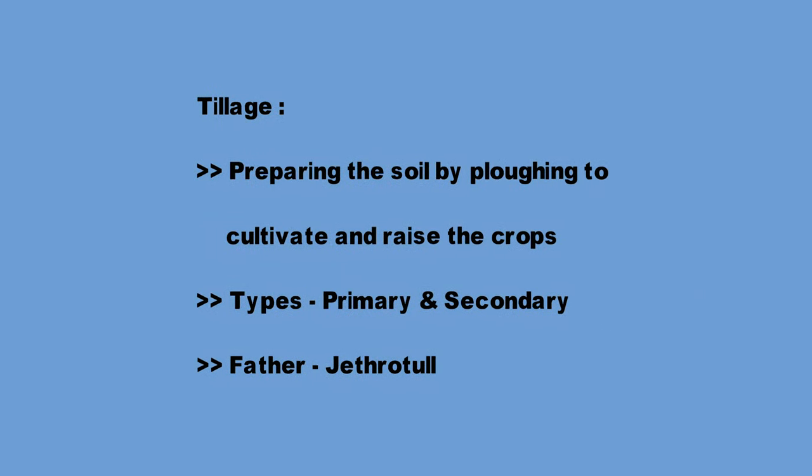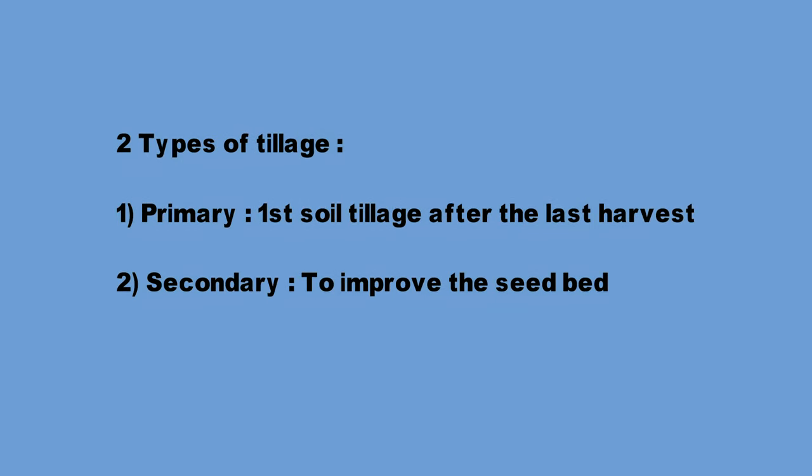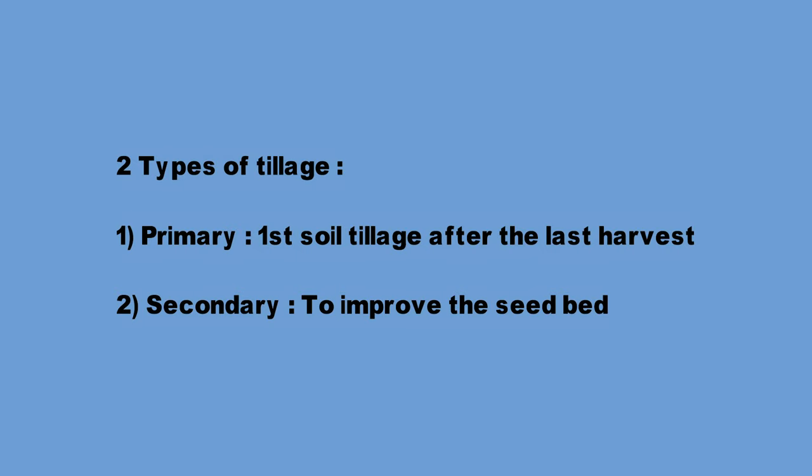The second topic is tillage. It is a process of ploughing and preparing the soil for seeds to sow, to cultivate, and to raise the crops. Jethro Tull is the father of tillage. The two types of tillage are primary and secondary. Primary tillage is the first soil tillage after the last harvest, done immediately after crop harvest or at the beginning of the next wet season. Secondary tillage is done to improve the seed bed by increased soil pulverization and to conserve moisture.